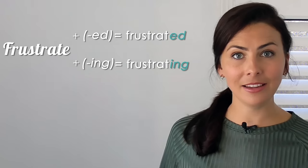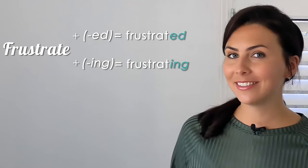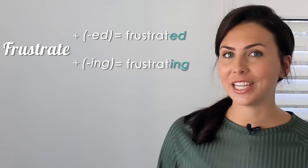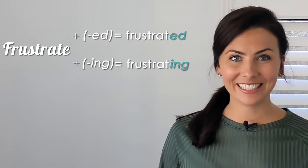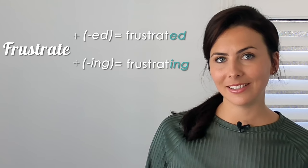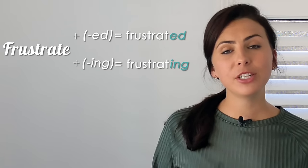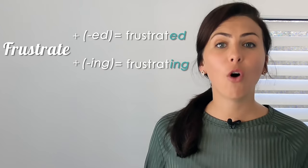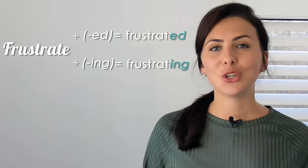Lots of these English adjectives are made by adding -ed or -ing to a verb. For example, the verb frustrate can become an adjective by adding -ed, frustrated, or -ing, frustrating. These endings are called suffixes and when we add them to the end of a verb, they transform our verb into an adjective.